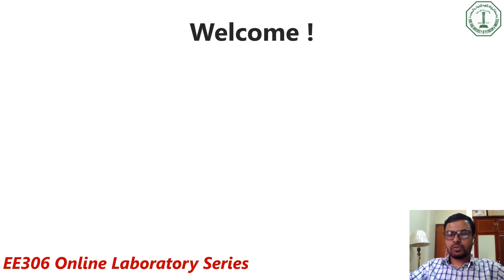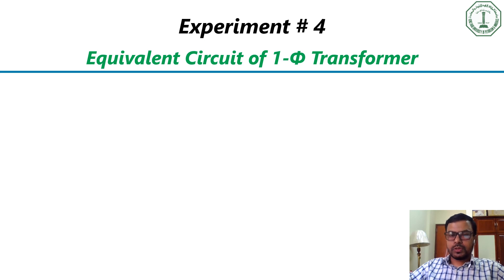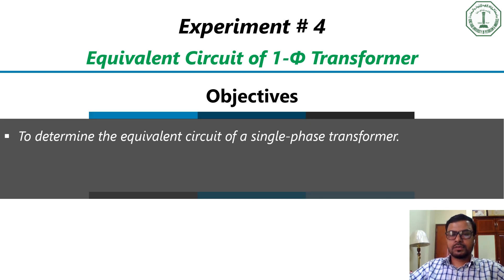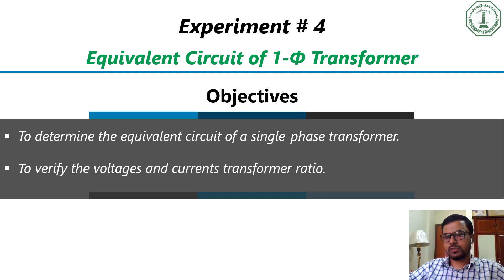Hello, welcome back to our online lab series. In this video, we will be demonstrating experiment number 4: the equivalent circuit of a single-phase transformer. The first objective is to determine the equivalent circuit of a single-phase transformer, whereas the second objective is to verify the voltage and current transformer ratio.